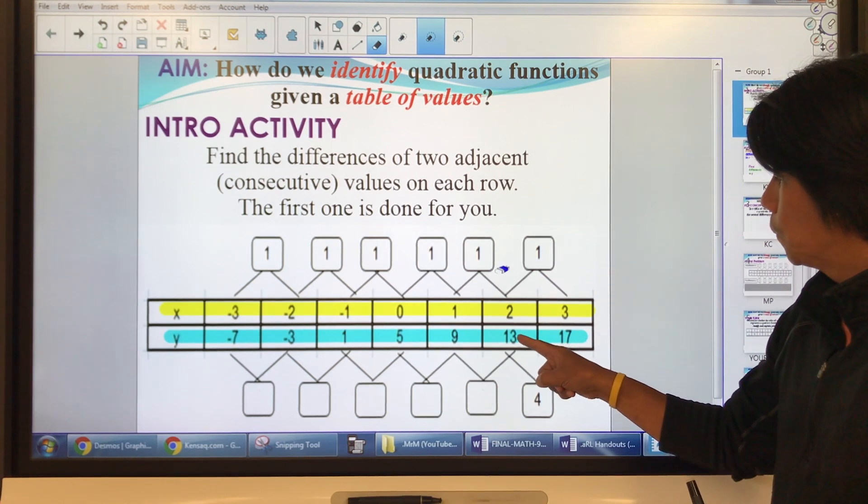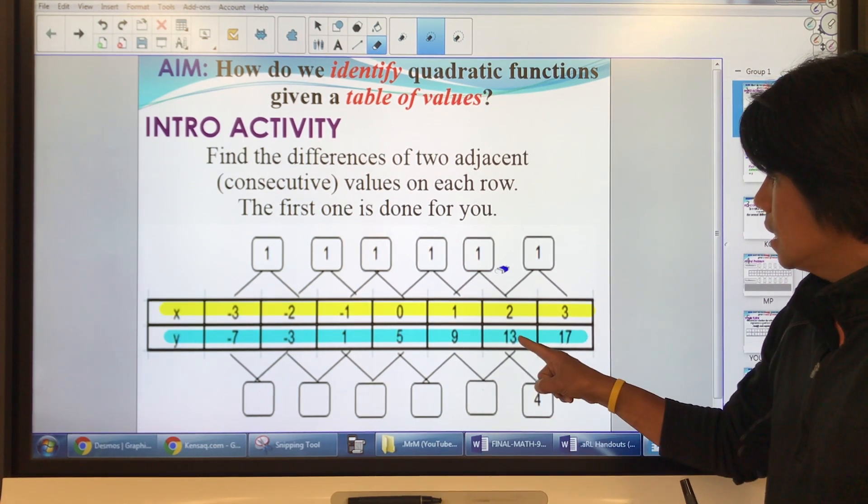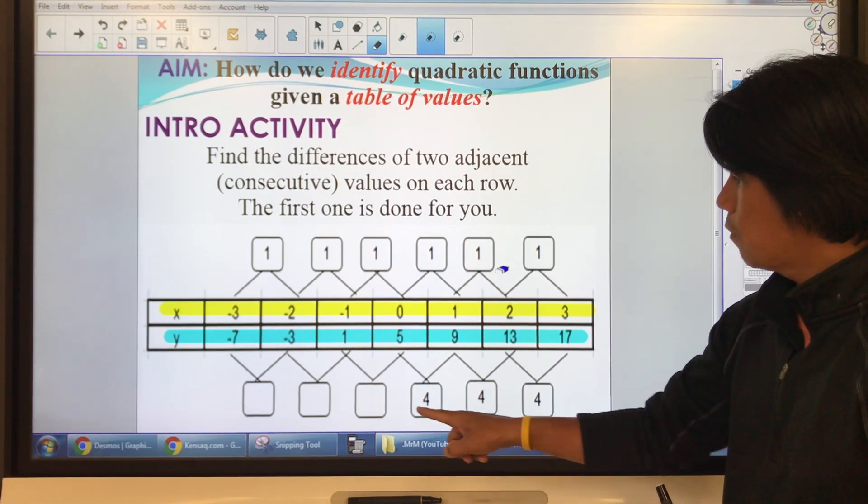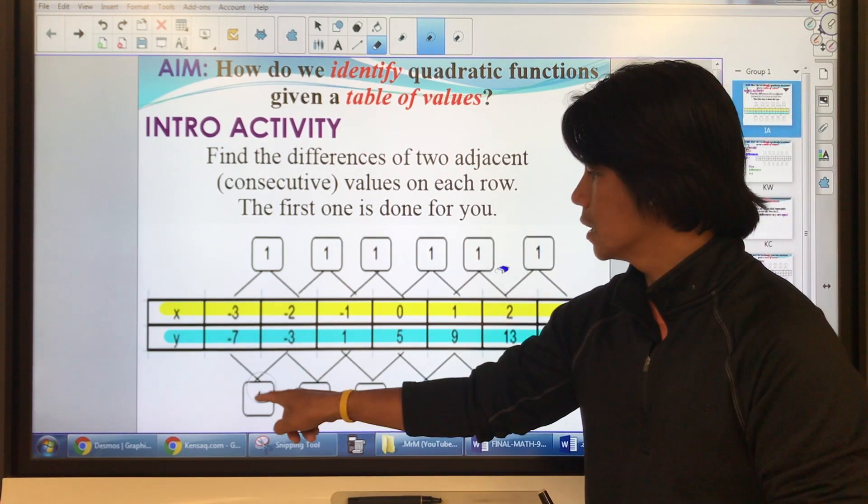17 take away 13, that's 4. 13 take away 9, that's 4. This is 4, that's 4, that's 4.